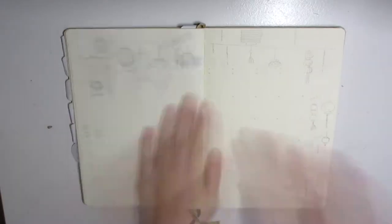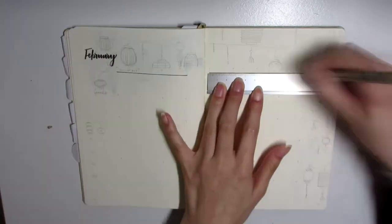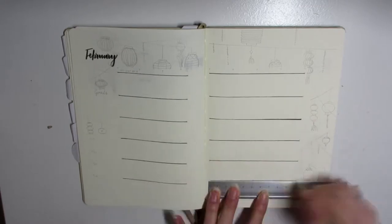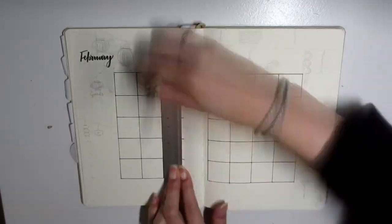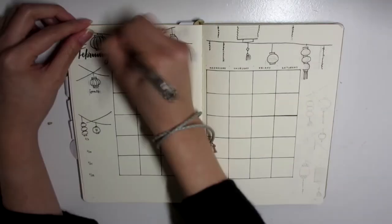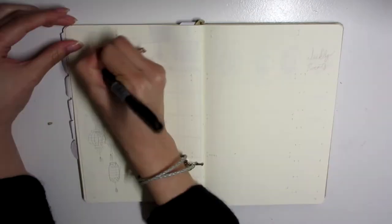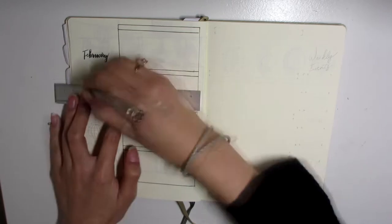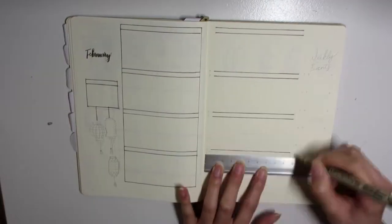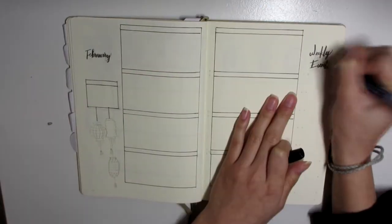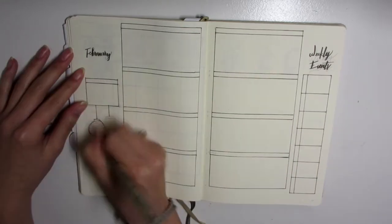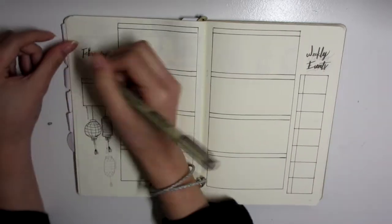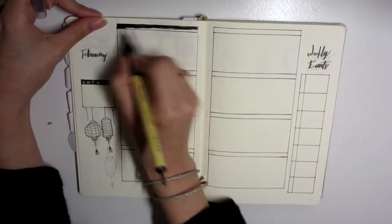Basically I'm just speeding through everything because I think that it would take a while if I just slowed it down or put it in normal speed. So I'm just breezing through the mood tracker, the habits tracker, the monthlies page, and now February's weekly spreads.